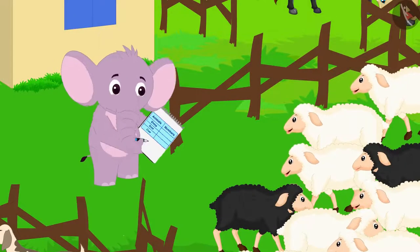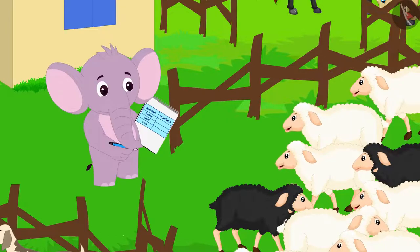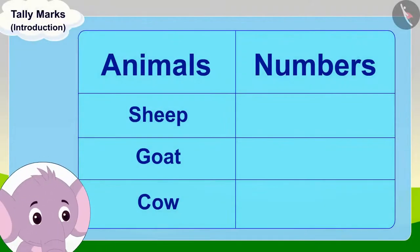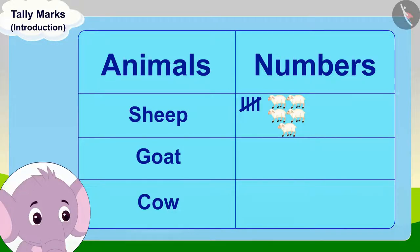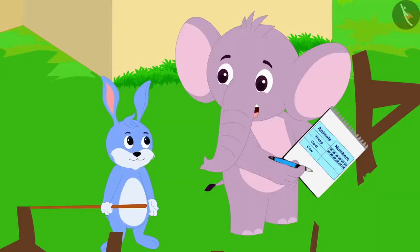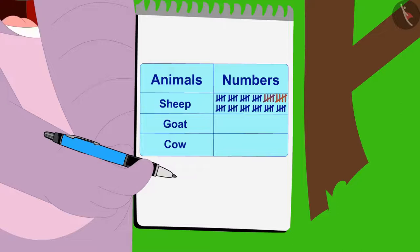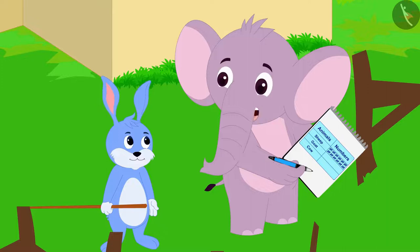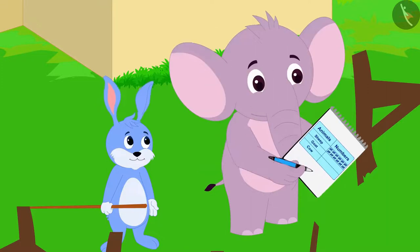Appu started counting his sheep once again according to what Bunny had said. He counted five sheep and drew tally marks. Then, for the next five sheep, he once again drew the tally marks. In this way, Appu finished counting all his sheep. He said, Bunny, I finished counting all my sheep very quickly. But now I see only groups of five tally marks. How will I know what the total number of sheep is?